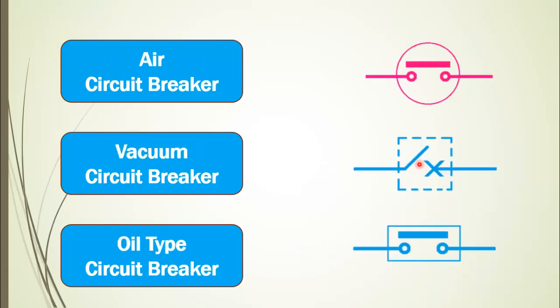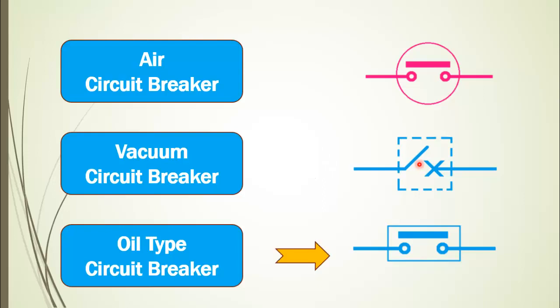Then come the types of circuit breaker based on the quenching method. The first is the air circuit breaker, next is the vacuum circuit breaker, which is normally used for voltage ranges above 11 kilovolts. Another is the oil type circuit breaker. If you are interested in studying the different types of circuit breakers, there is a link at the top of this video.